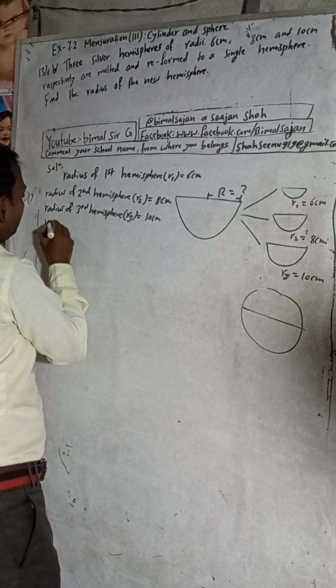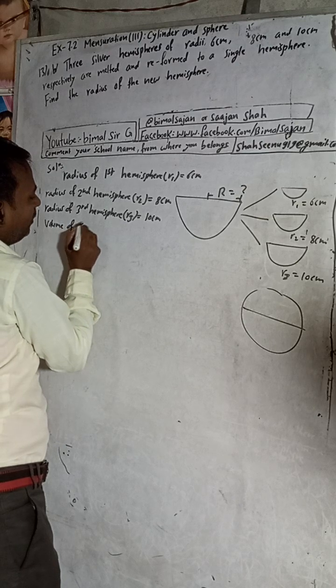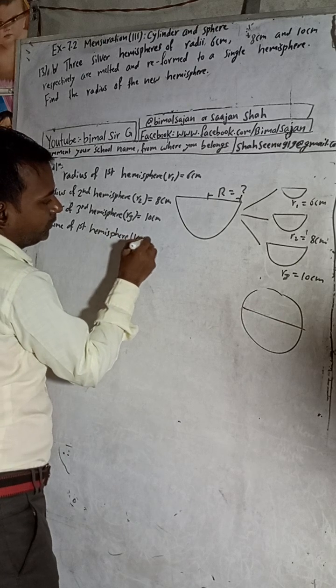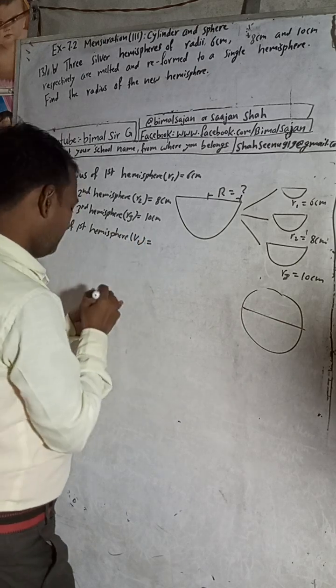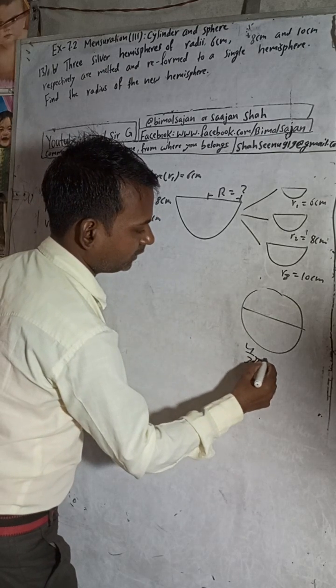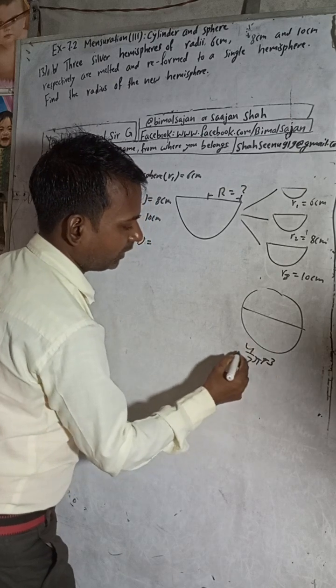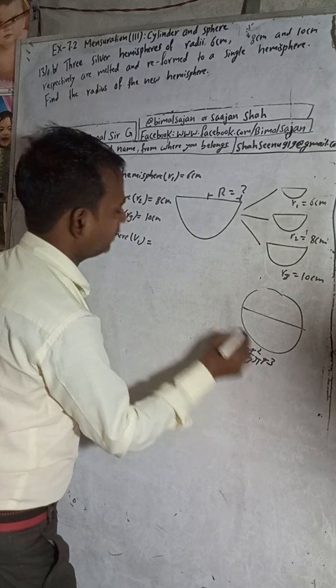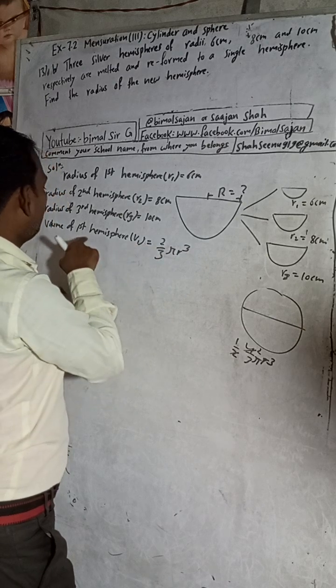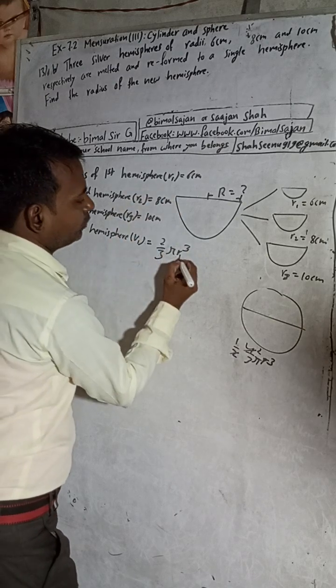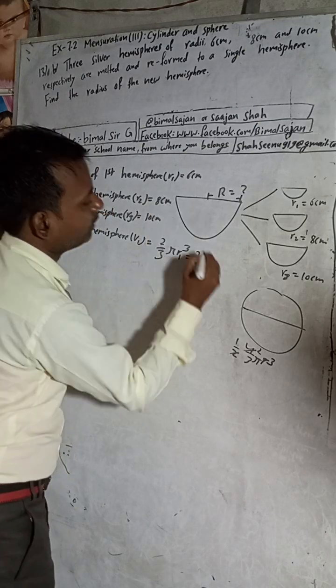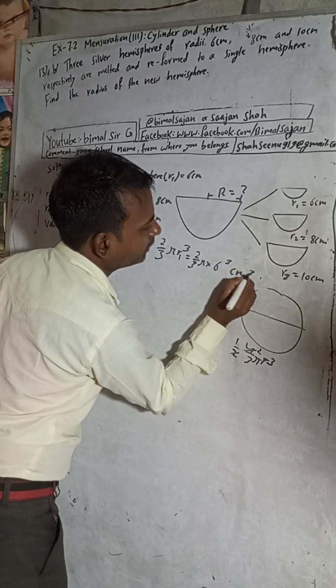Then volume of first hemisphere V1, hemisphere formula is 4 by 3 pi R³, but half of this is what? Half means 1 by 2, so this will be 2 by 3. So 2 by 3 pi R³. But here, first hemisphere radius is R1, so R1. Now 2 by 3 pi into R1, R1 is 6 cube. This is cm³ because this is given centimeter.